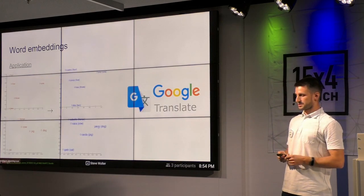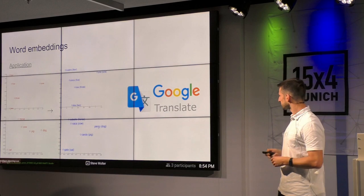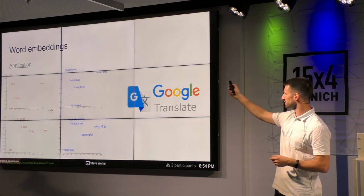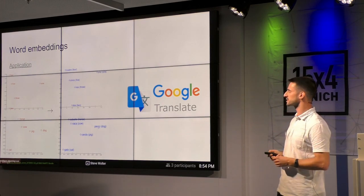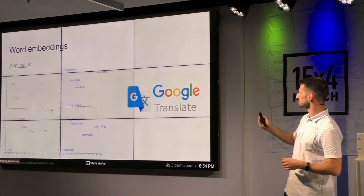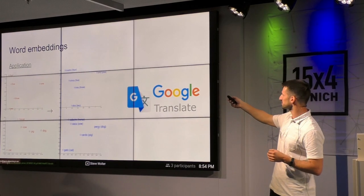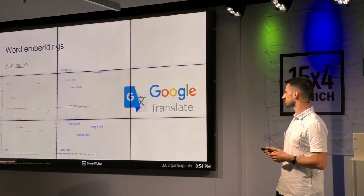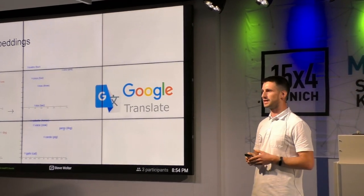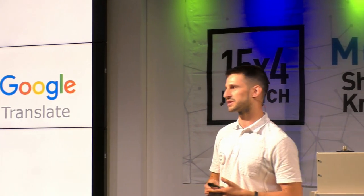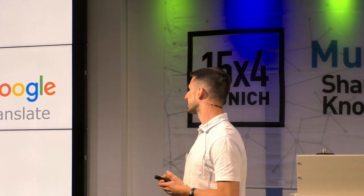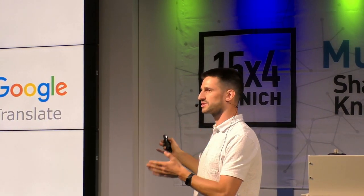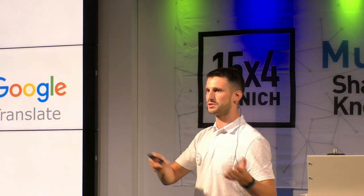Another interesting application is about languages. On the left side there are words in English, and on the right side the same words in Spanish. The position for the word 'one' is really close to the position of 'uno', which is one in Spanish. The same applies to any word — like four and cuatro, cat and gato. This idea is actually one of the basic ideas behind Google Translate algorithms. You take the word in English, create an embedding, look for the closest embedding in the Spanish vocabulary, and that would be your translation.